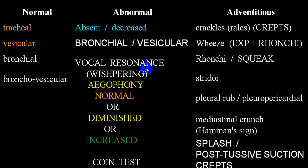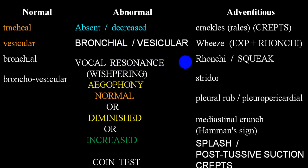For vocal resonance, ask the patient to speak in their vernacular language — 'one two three' or 'A B C' or equivalent — while you auscultate and compare both sides. The tone should remain constant. In a normal person, comparing identical areas on both sides, the sound should be equal. Like tactile vocal fremitus, if the sound intensity is reduced or absent, that is the disease side.